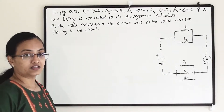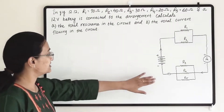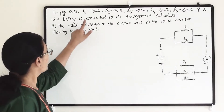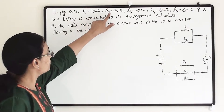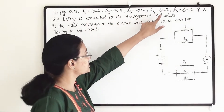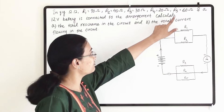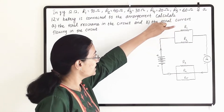It says that in figure 12.12, R1 is 10 ohm, R2 is 40 ohm, R3 is 30 ohm, R4 is 20 ohm, and R5 is 60 ohm.